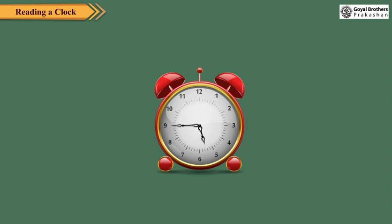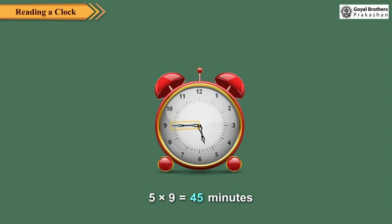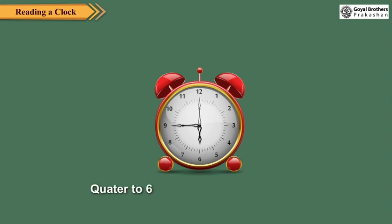Observe this clock. The hour hand is between 5 and 6. The minute hand is at 9, that is, in the 2nd half hour. So 5 × 9 equals 45 minutes have passed. It means the minute hand has yet to travel 15 minutes, or 1 quarter, to reach the next hour of 6. So the time is quarter to 6 or 5.45.